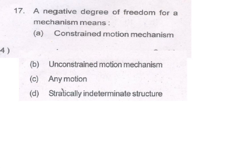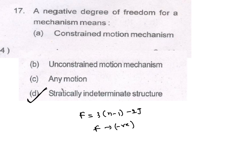A negative degree of freedom for a mechanism: the degree of freedom F equals 3(n−1) minus 2j. When F is negative, from the options, the answer is statically indeterminate structure. For constrained motion, F should be equal to 1.